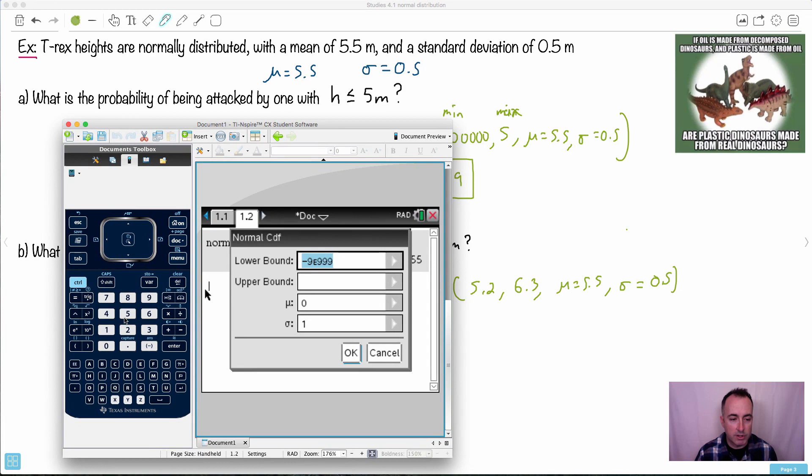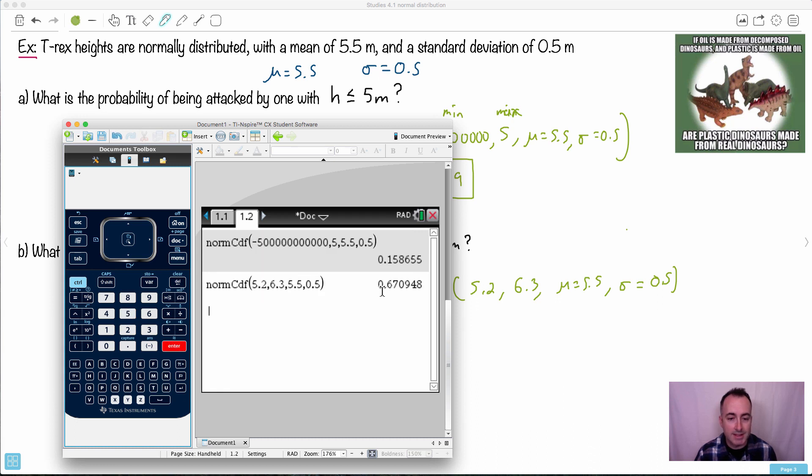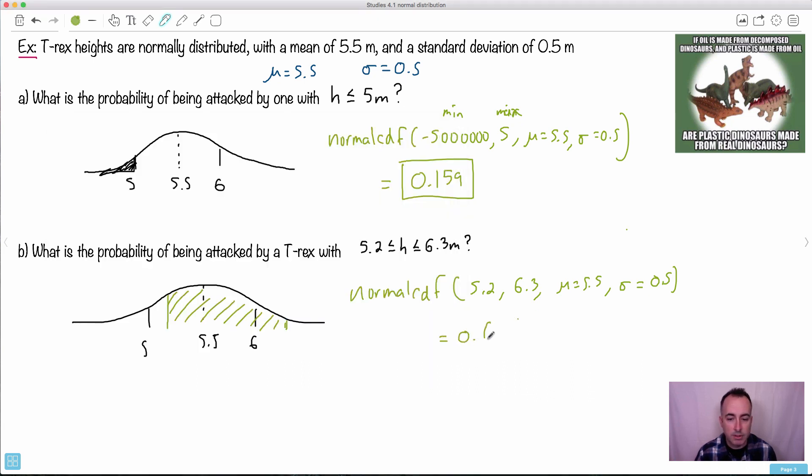So again, I put in my minimum, which is 5.2 this time. My maximum, which is 6.3. My mean is 5.5, and my standard deviation is 0.5. Away I go. I press enter and I get 0.671 if I want three significant figures. So 0.671. That's it.